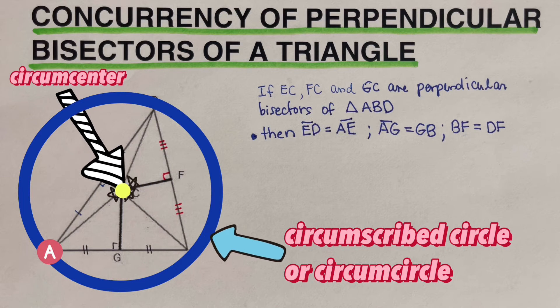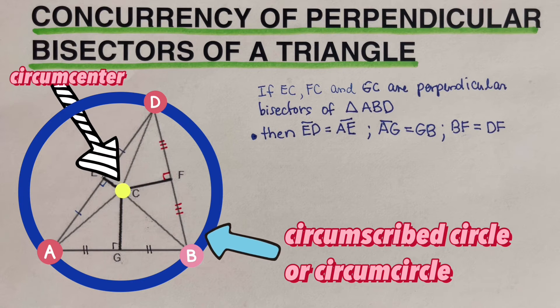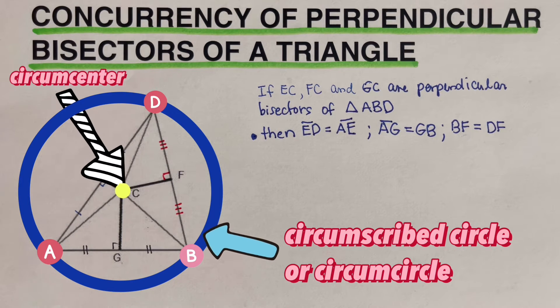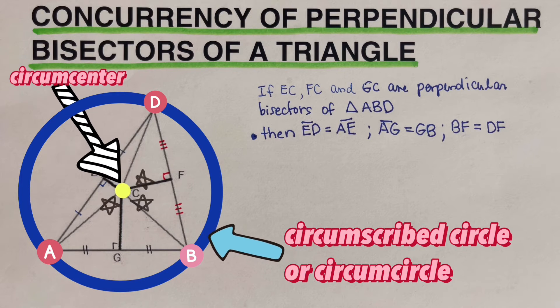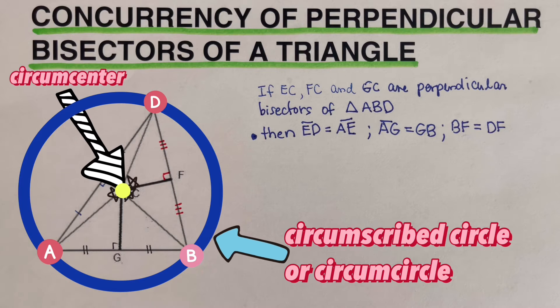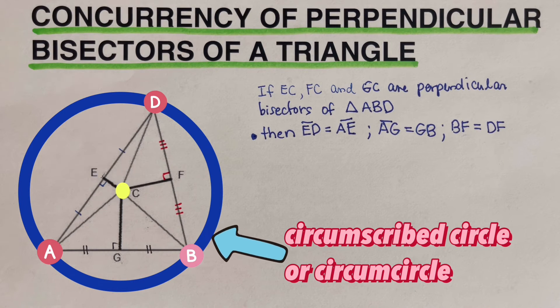So you can see the vertex A, D, and B are actually on the circle. So that's why we call this circle as the circumscribed circle or the circumcircle of this triangle. Now notice this very carefully.